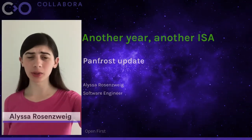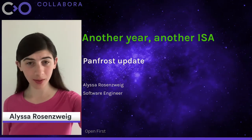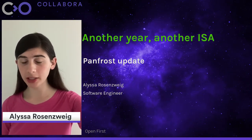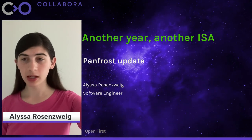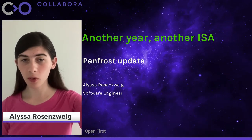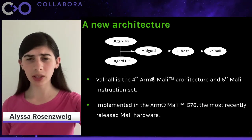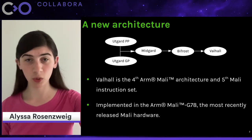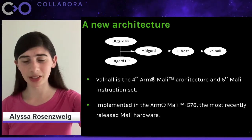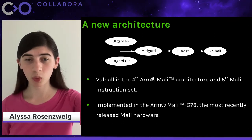You have an open source driver in Mesa for current generation hardware. You have machine-readable documentation for that architecture in Mesa, and you're about to be certified conformant - when the vendor of the hardware comes out and deprecates the architecture, releases a new architecture, and doesn't document it or release open-source drivers for it. What do you do?